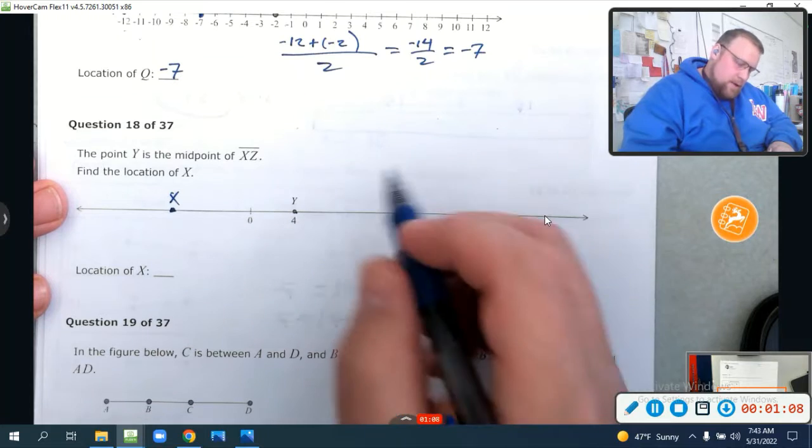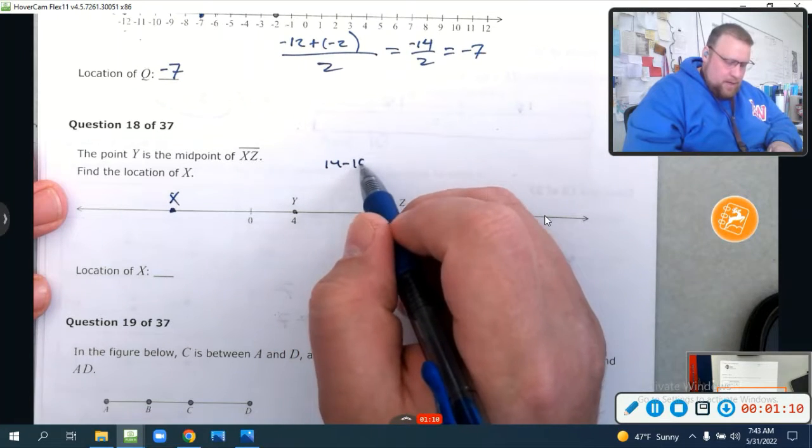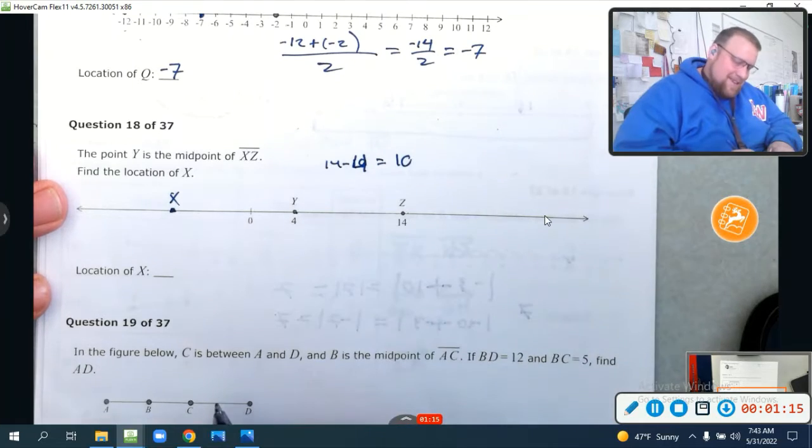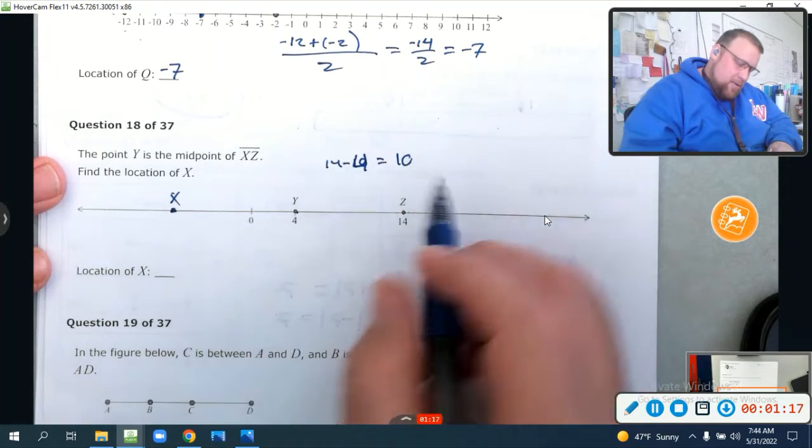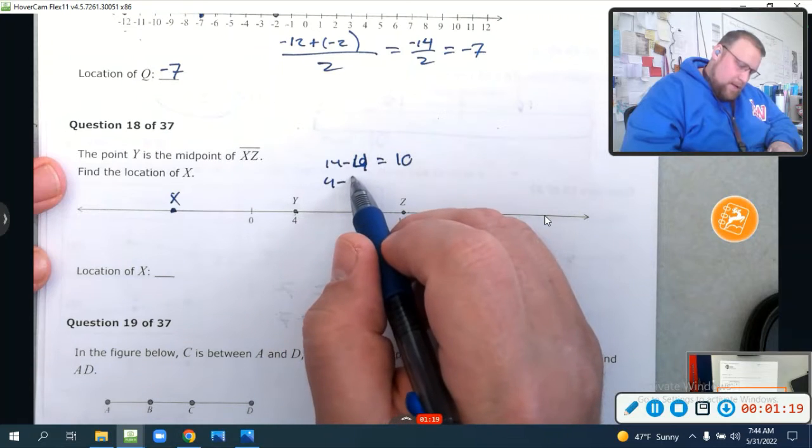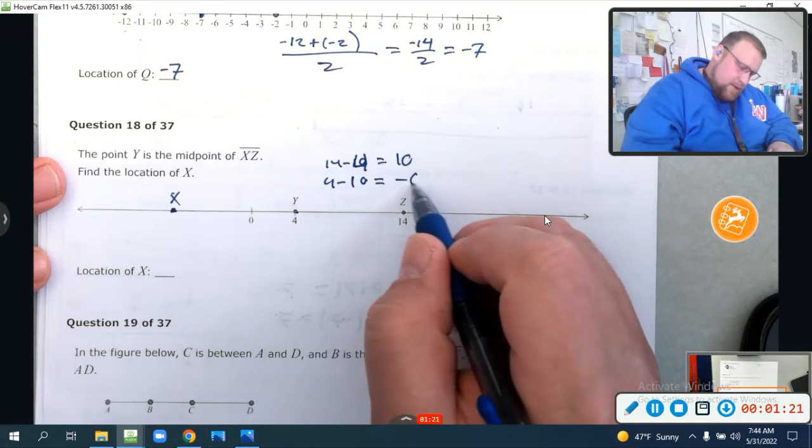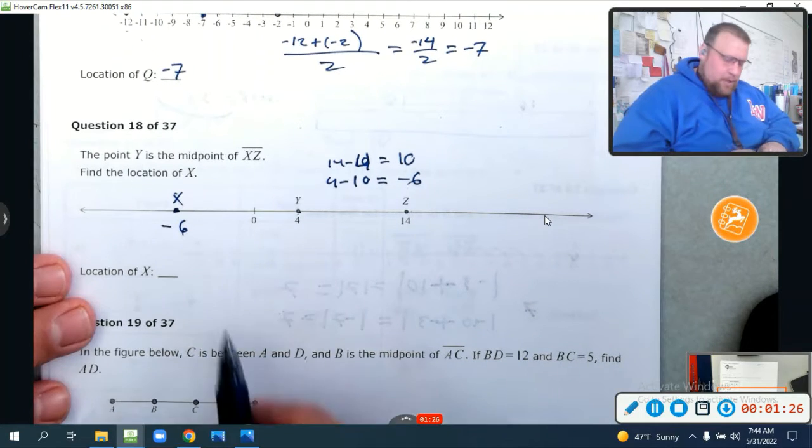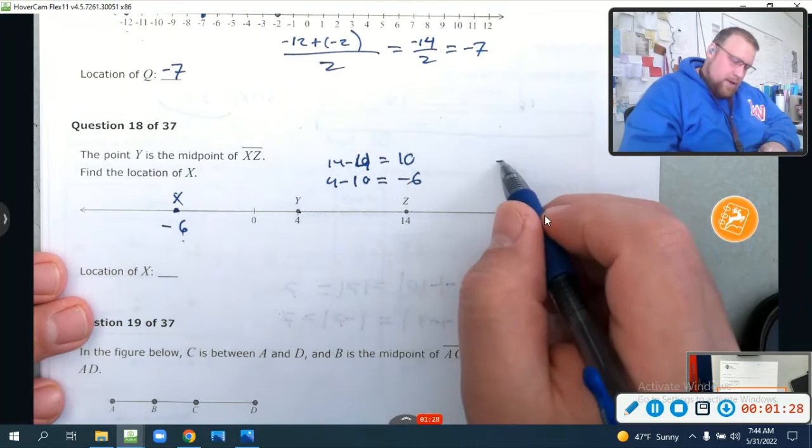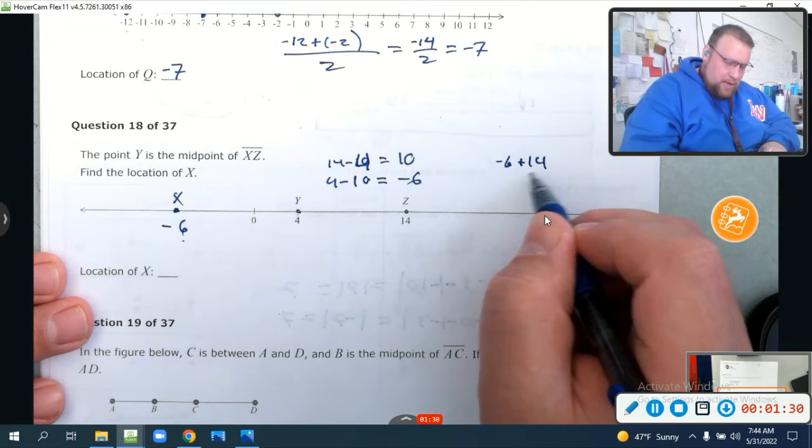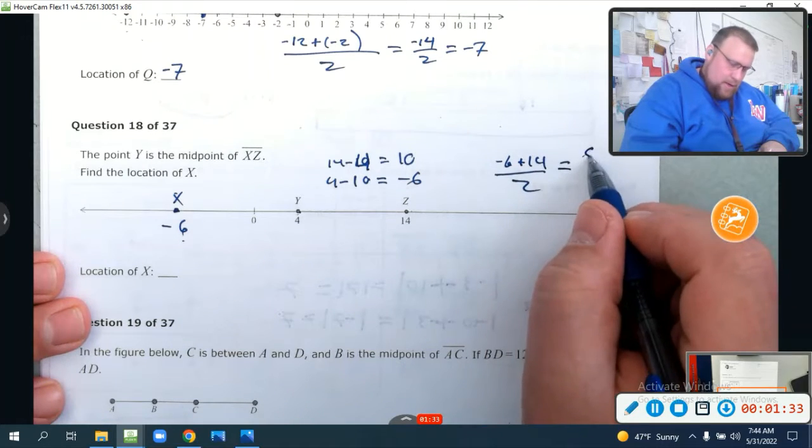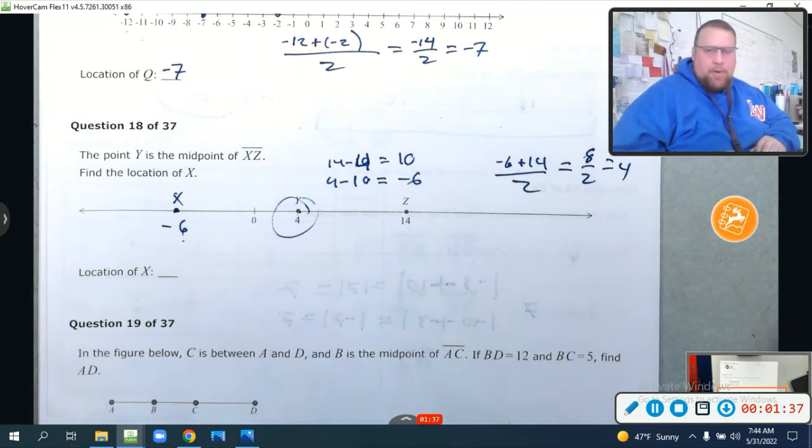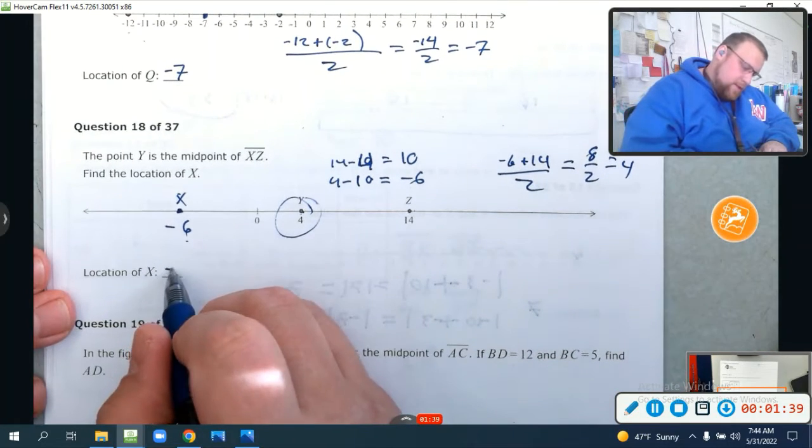Well, let's find the distance here. 14 minus 10 is, or excuse me, minus 4 equals 10. So because of that, I need to do 4 minus 10, which is negative 6. So this should be negative 6. If you ever want to check it, just add those two numbers together. Negative 6 plus 14 over 2 is going to be 8 over 2, which equals 4. And that is the midpoint right there. So the location of X is at negative 6.